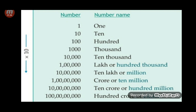Children, you would have noticed that numbers above 10,000 have two different names. The system of naming numbers in India is different from that of most countries. So we have two different place value charts. After 10,000 we have lakh or 100,000, 10 lakh or million, crore or 10 million, 10 crore or 100 million, and 100 crore or billion.